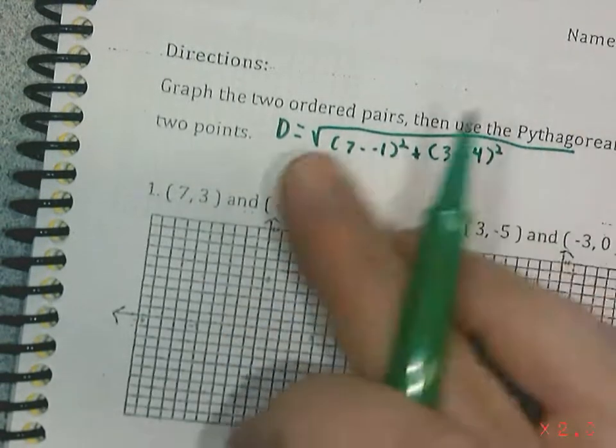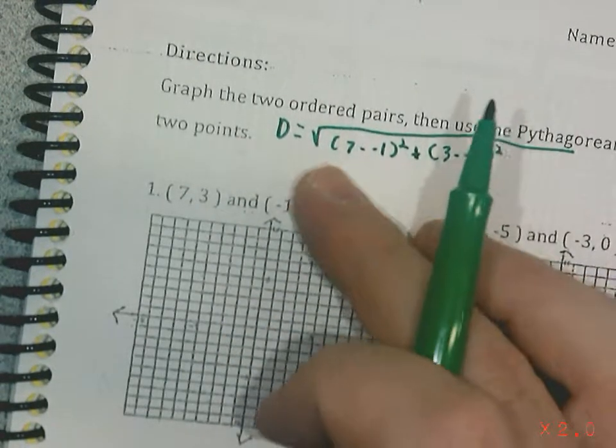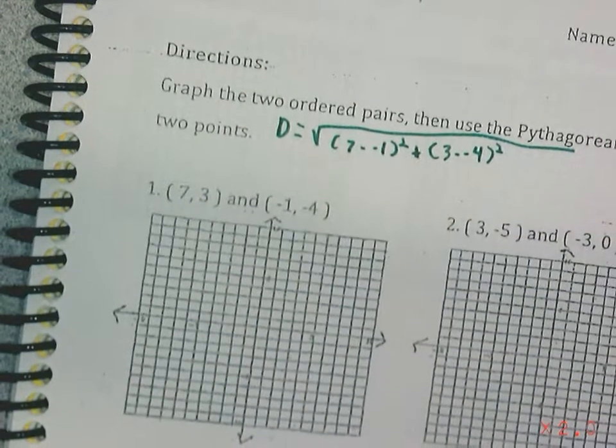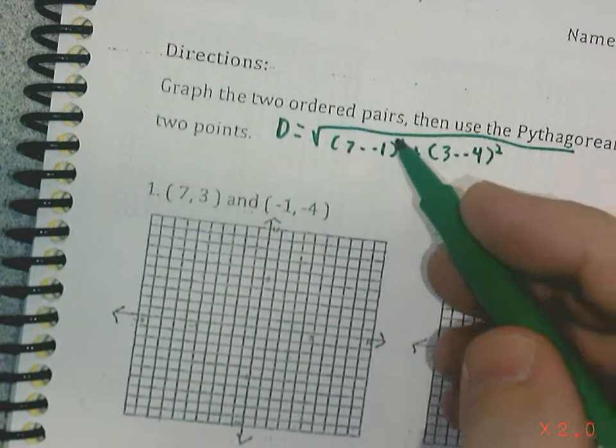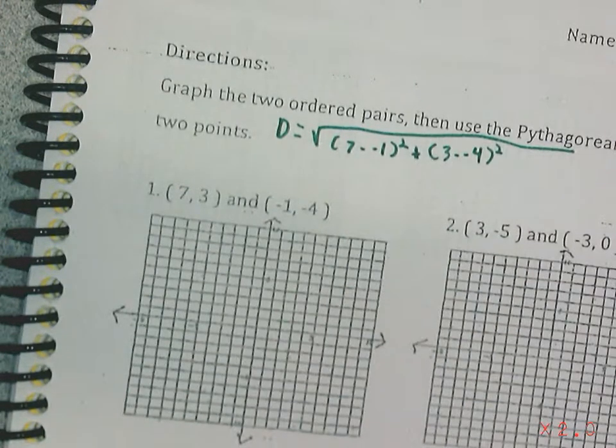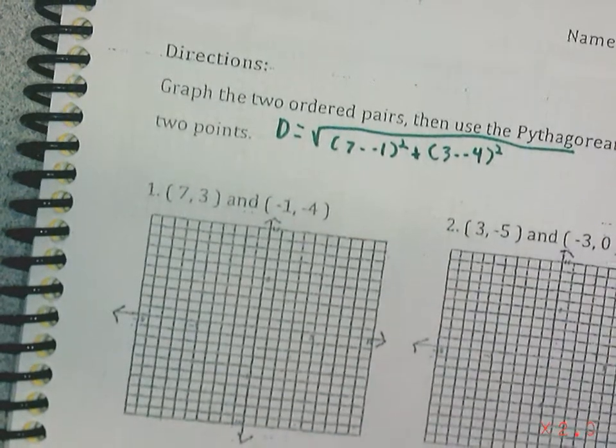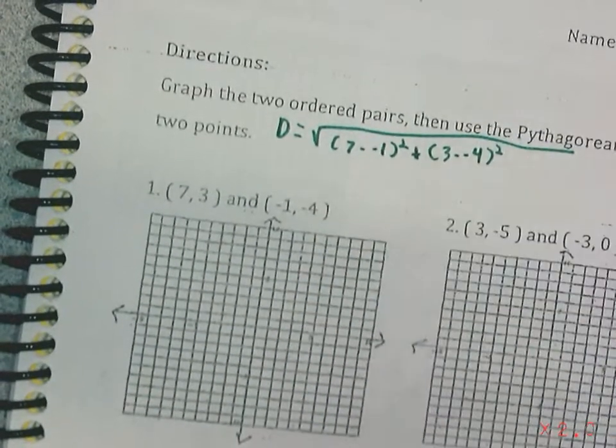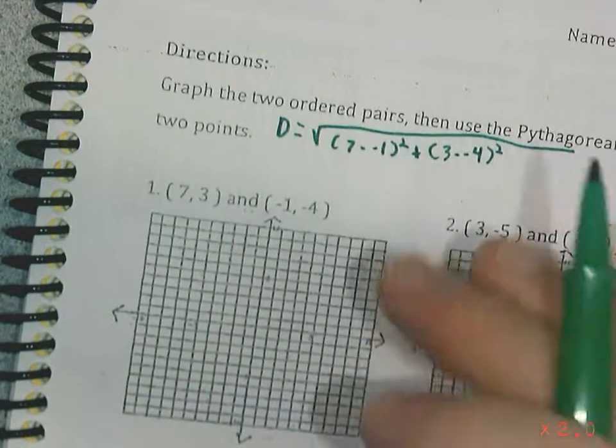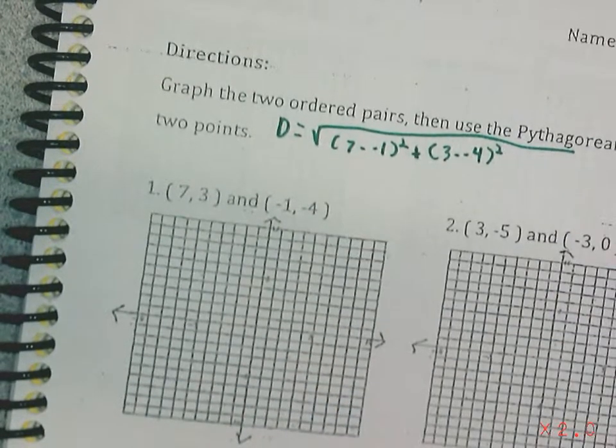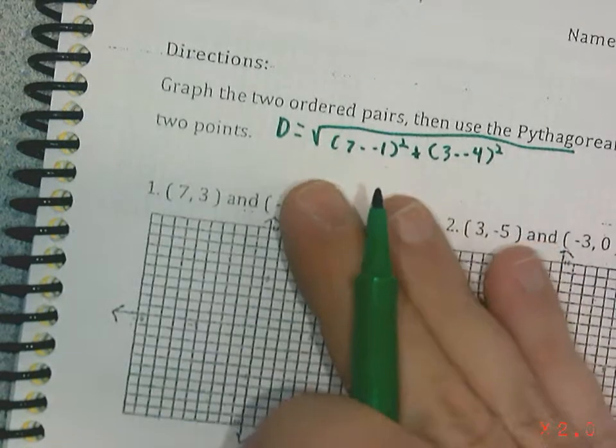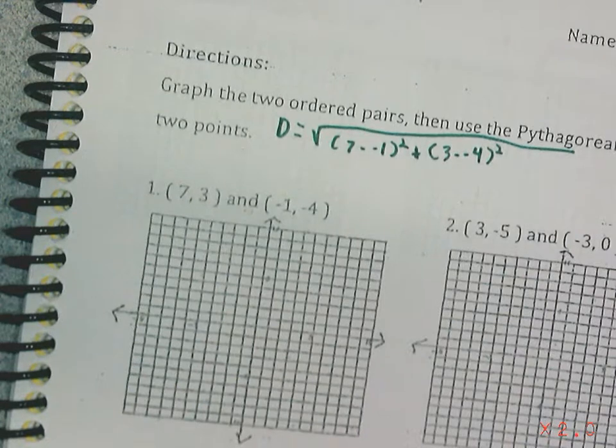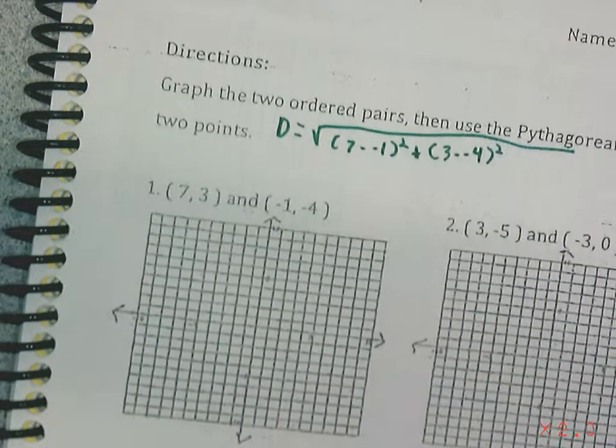Now it doesn't matter the order in which you subtract them. I could do negative one minus seven. It gives me a different answer, it would give me negative eight instead of positive eight. But when you square it you end up with the same answer anyway, because anytime you square something, it becomes positive. So either way, you're going to end up with the same answer. Just make sure when you square it, it is actually positive. That's something your calculators will mistake, so make sure you're doing that correctly.